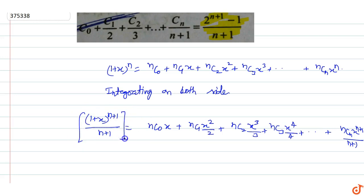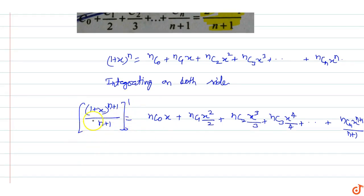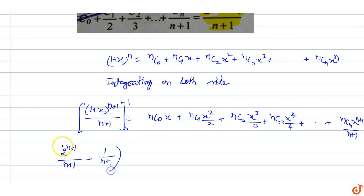Now applying limits from 0 to 1: putting x equal to 1, the left side gives 1 plus 1 equals 2, so 2 raised to power n plus 1 upon n plus 1. Putting x equal to 0 gives 1 raised to power n plus 1 upon n plus 1, which is 1 upon n plus 1. On the right side, putting x equal to 1 gives nC₀ plus nC₁ by 2 plus nC₂ by 3.